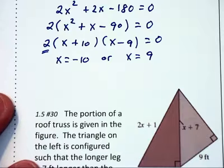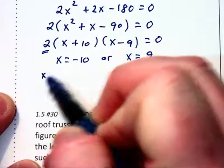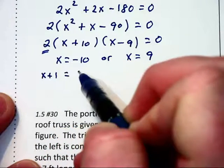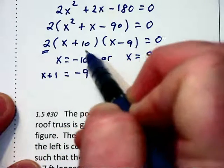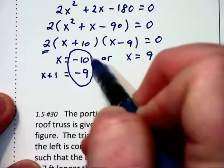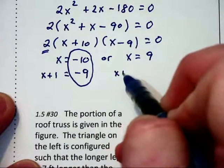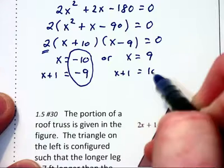Those are not your two solutions. Those are the possible values of x. Each of these has a corresponding x plus 1. So one solution set is negative 10 and negative 9, and another solution set is 9 and 10.